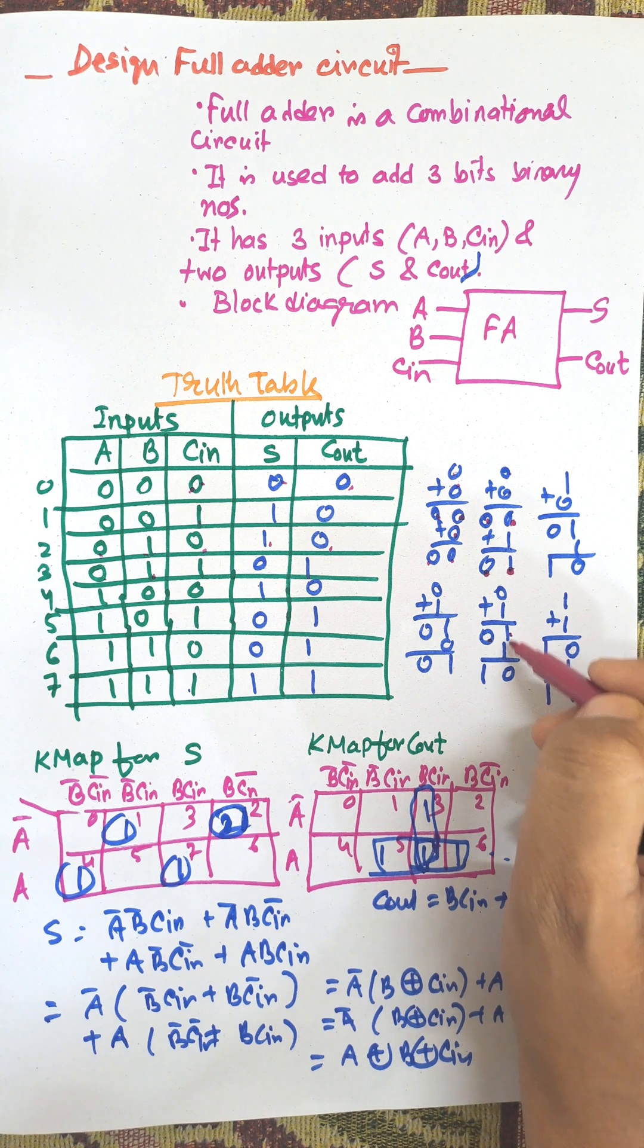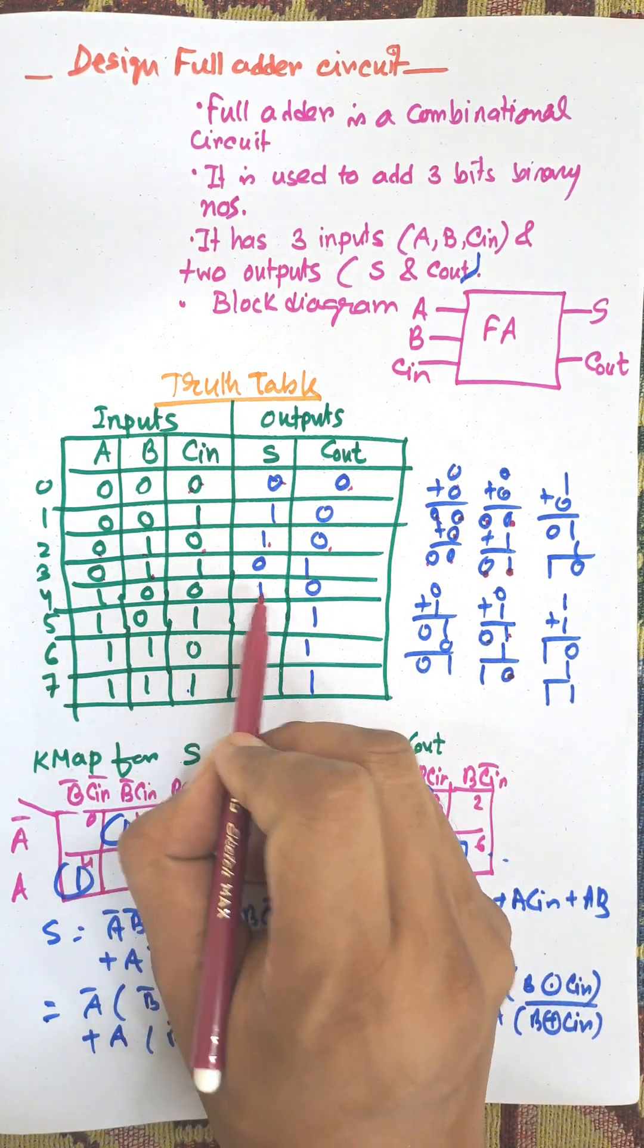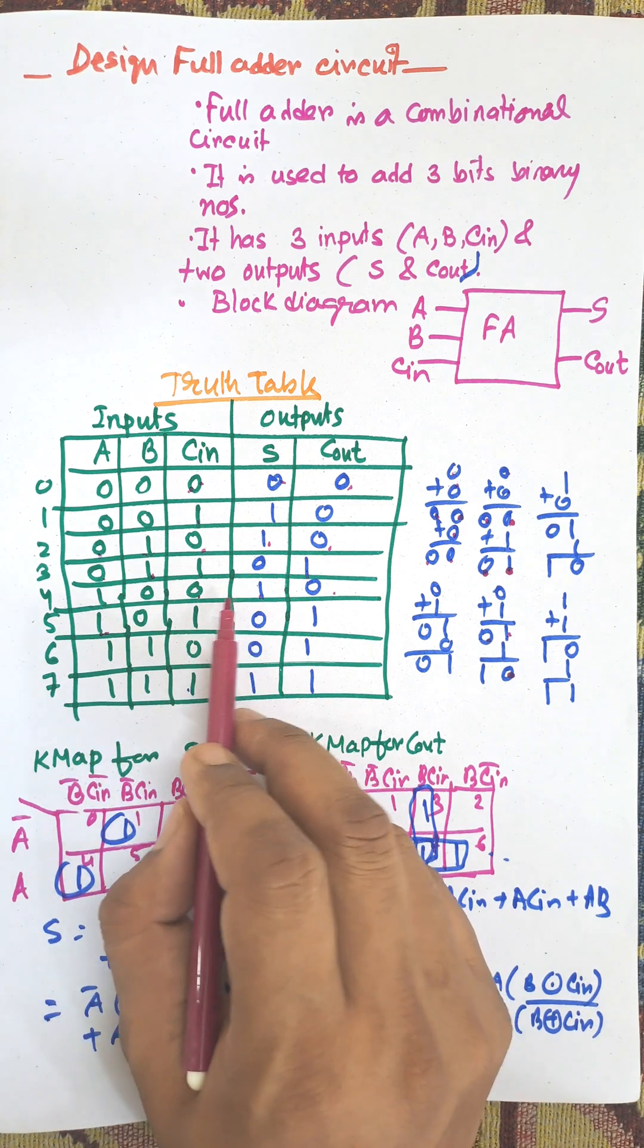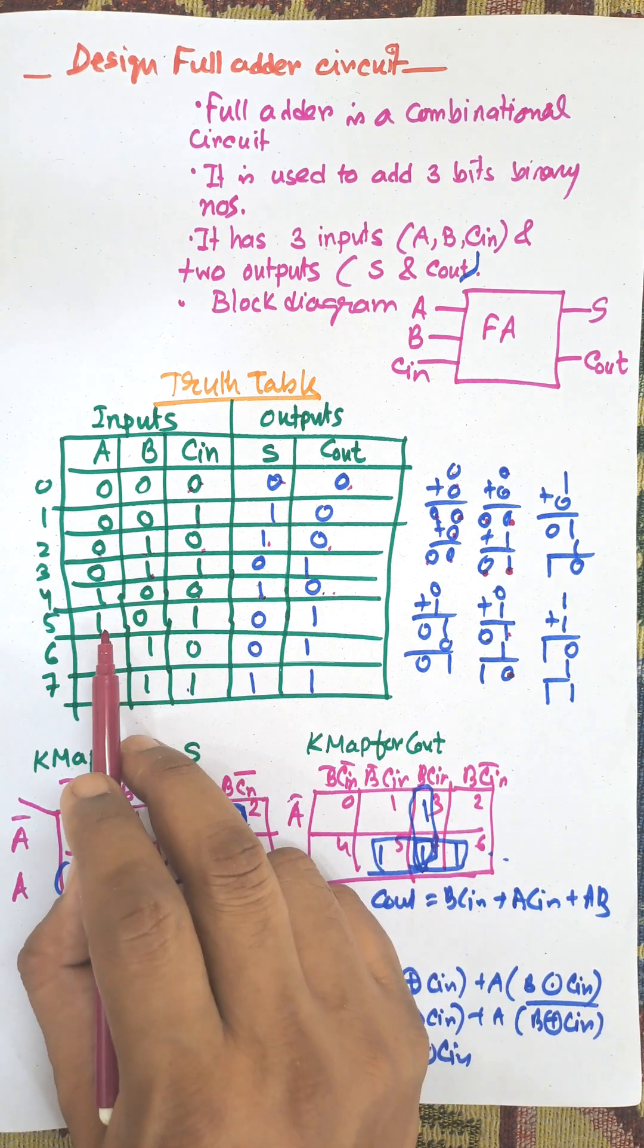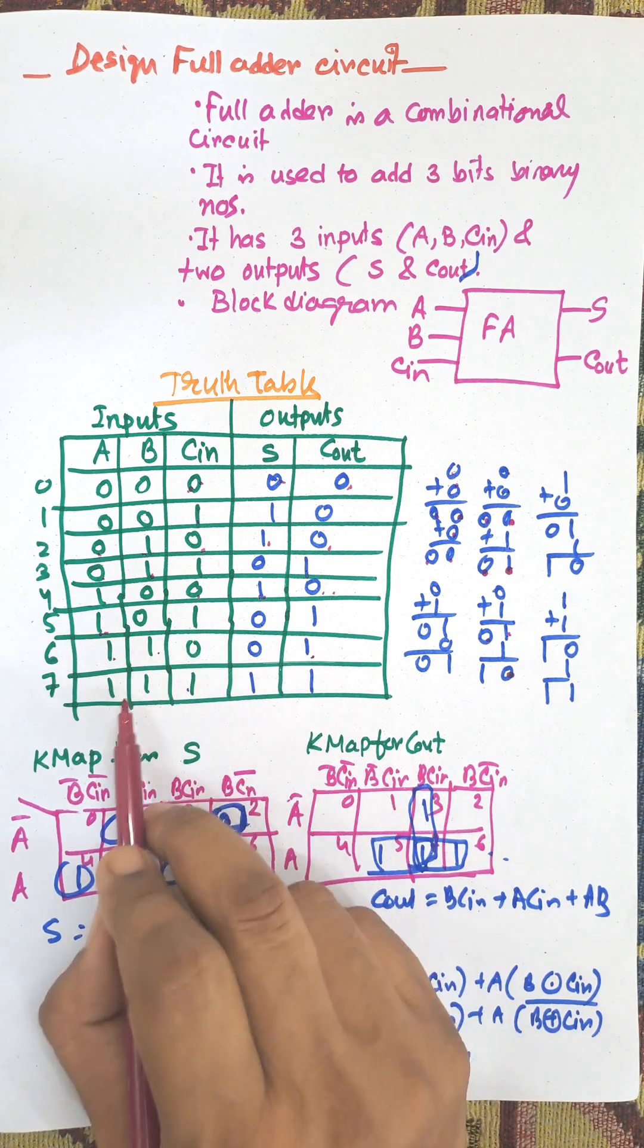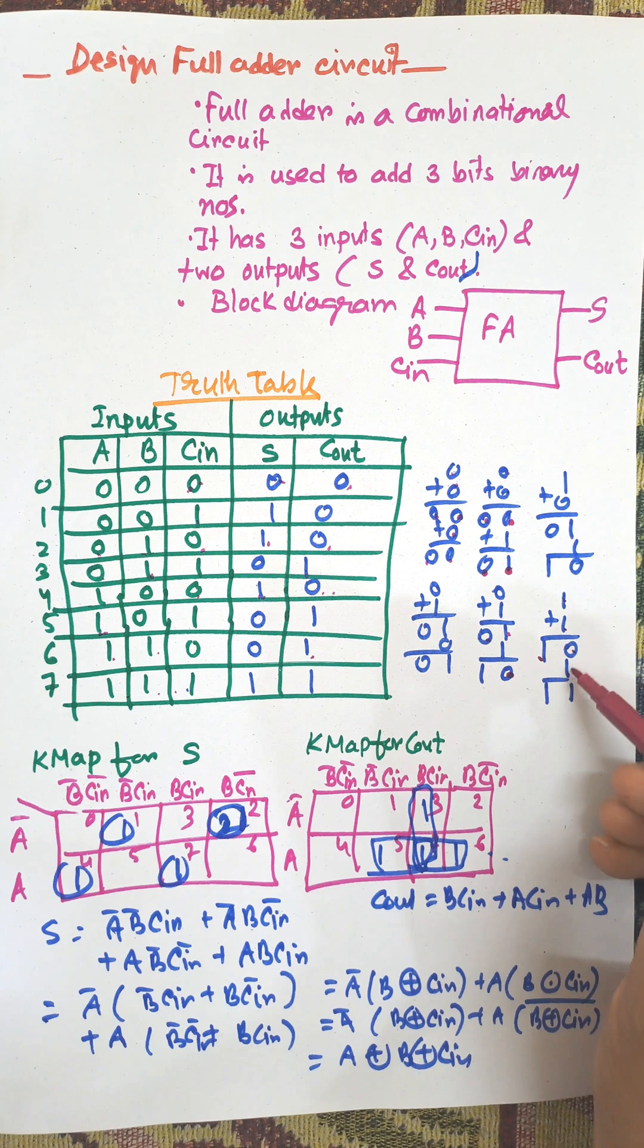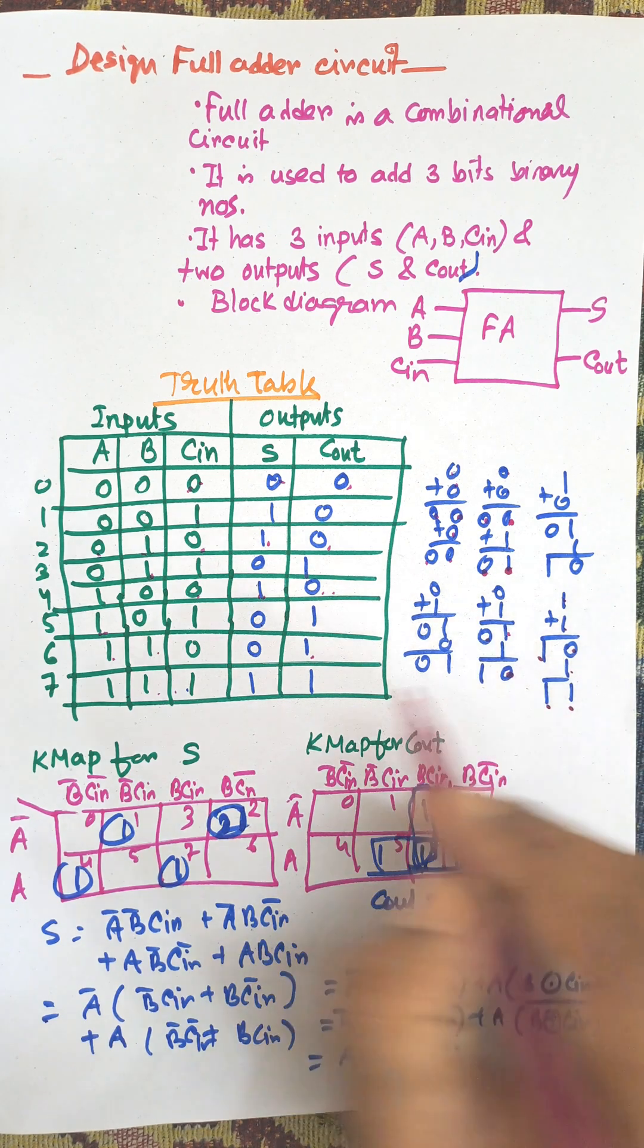For 1, 0, 0: sum is 1, carry 0. For 1, 0, 1: sum 0, carry 1. For 1, 1, 0: sum 0, carry 1. For 1, 1, 1: 1 plus 1 equals sum 0, carry 1, then next 1 is added, 0 plus 1 equals 1, so sum 1, carry 1.